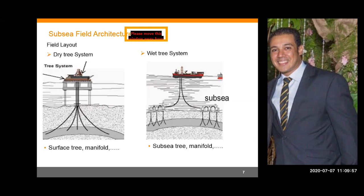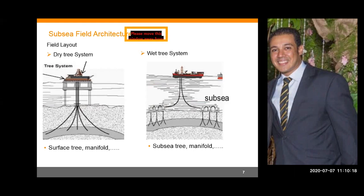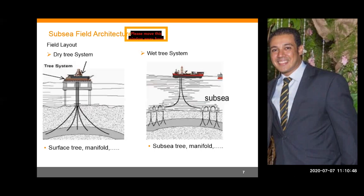The field layout has two main types: the dry tree system and the wet tree system. In the dry tree system, you have your well subsea but the Christmas tree is above the water, possibly on a surface structure. In the wet tree system, the subsea tree, manifold, and everything sit on the seabed, connected together to transfer production from the wellhead to the processing facility.